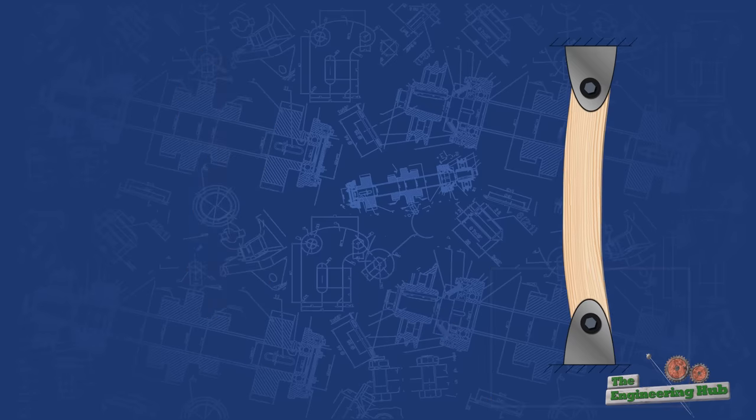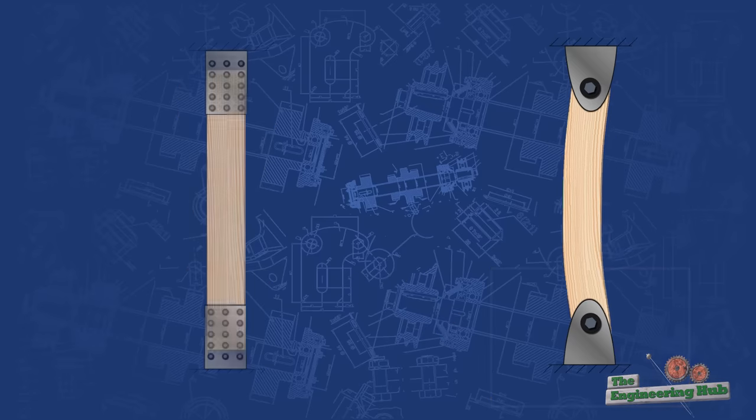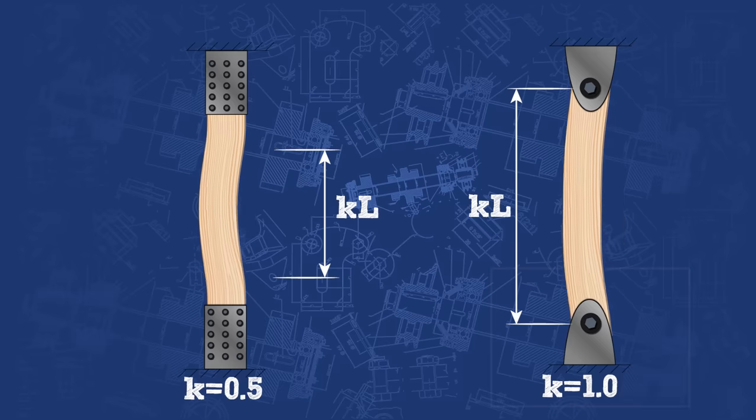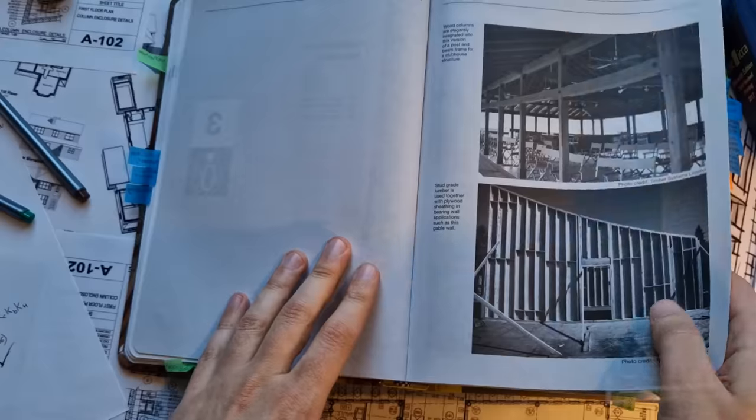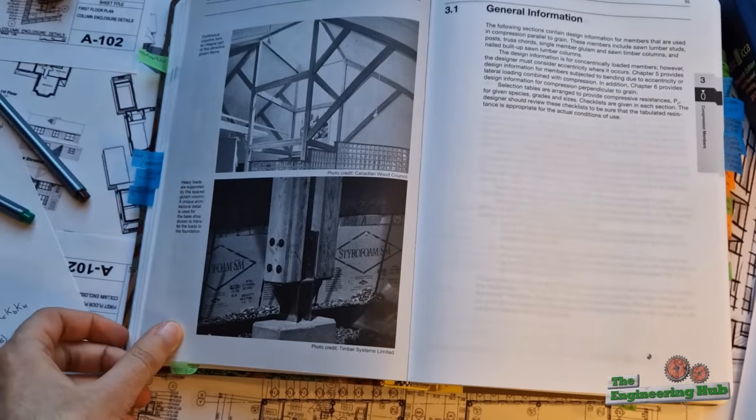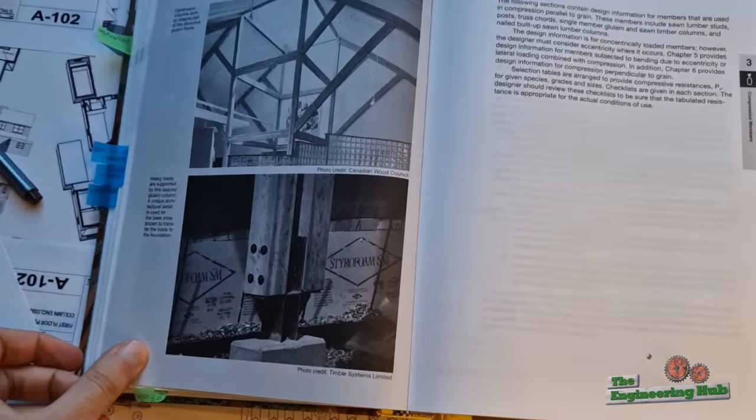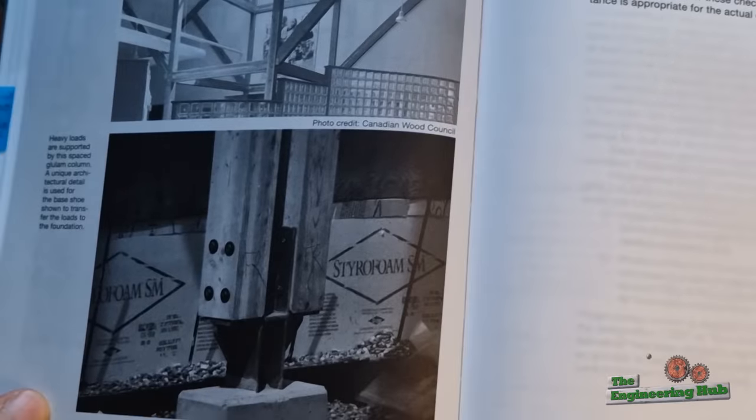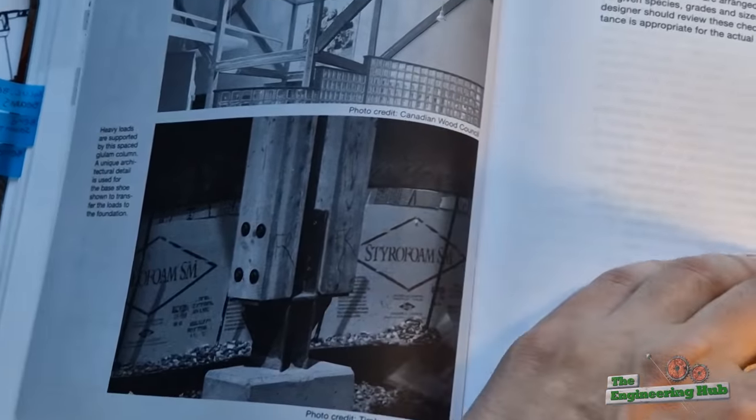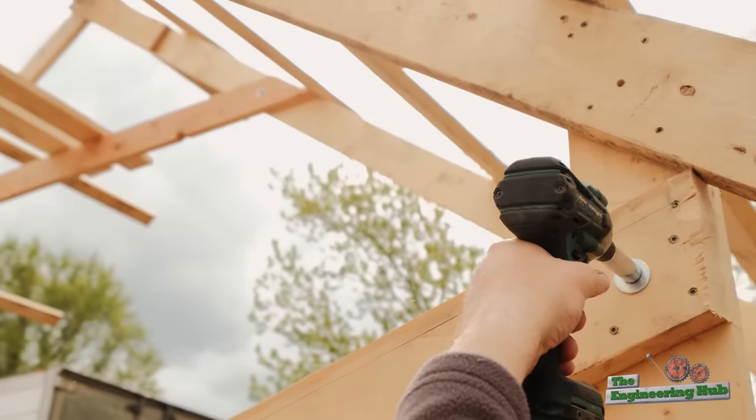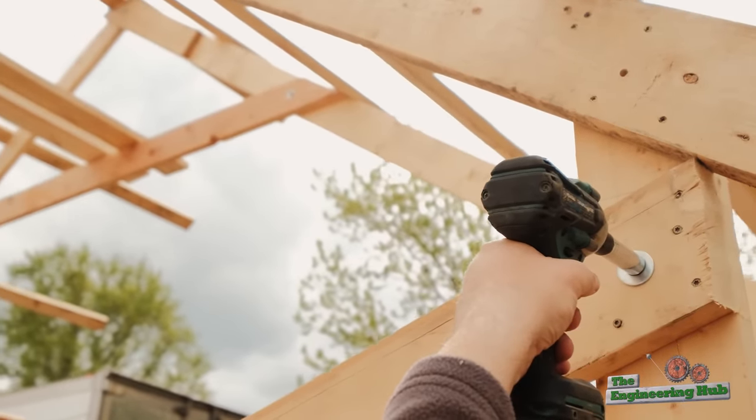Fully fixing the ends would increase the carrying capacity of the post. However, providing a full-moment fixity is difficult to achieve when it comes to wood connections. Semi-rigid connections are much more common, but for simplicity, we will assume no rotational stiffness in the connection, which would also produce a conservative estimation of the load carrying capacity.